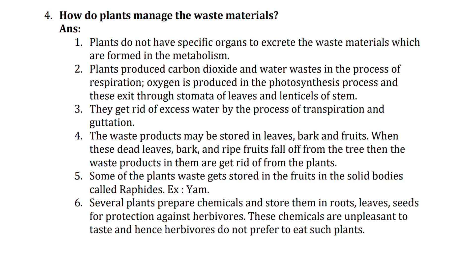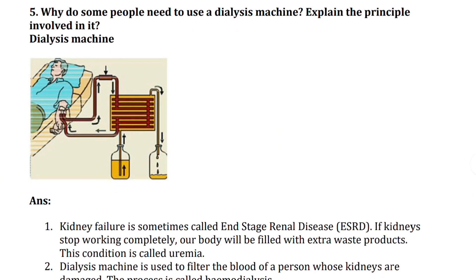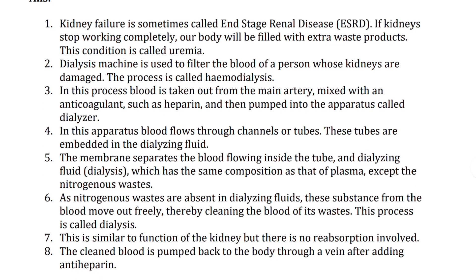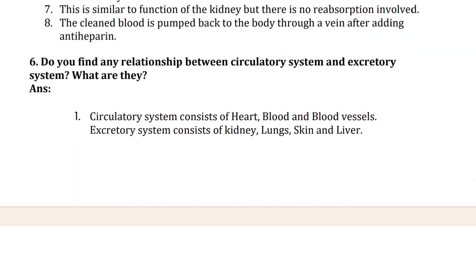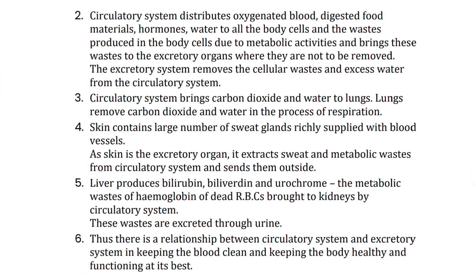The fourth question is: how do plants manage their waste materials? The fifth question is: why do some people need to use a dialysis machine — explain the principle involved. The answer covers kidney failure and includes a principle diagram. Then: do you find any relationship between the circulatory system and the excretory system?